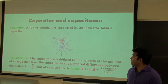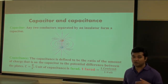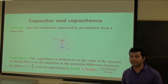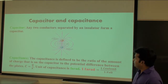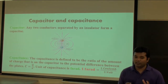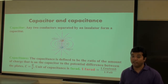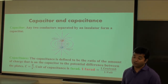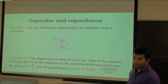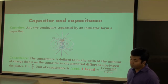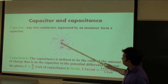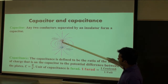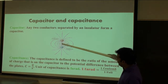What is a capacitor? A capacitor is a storing device. It can store electrical energy. Any two conductors separated by a vacuum or insulated medium form a capacitor. For a capacitor we need two conductors. For example, we have conductor A and conductor B separated by a vacuum.